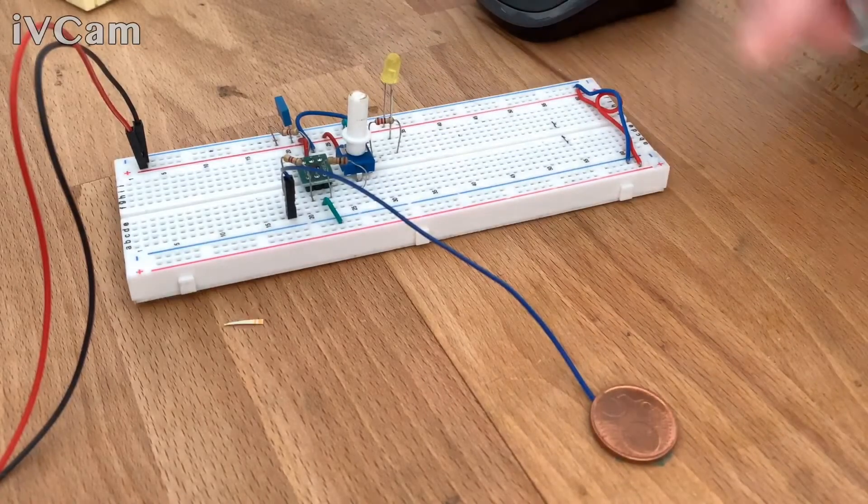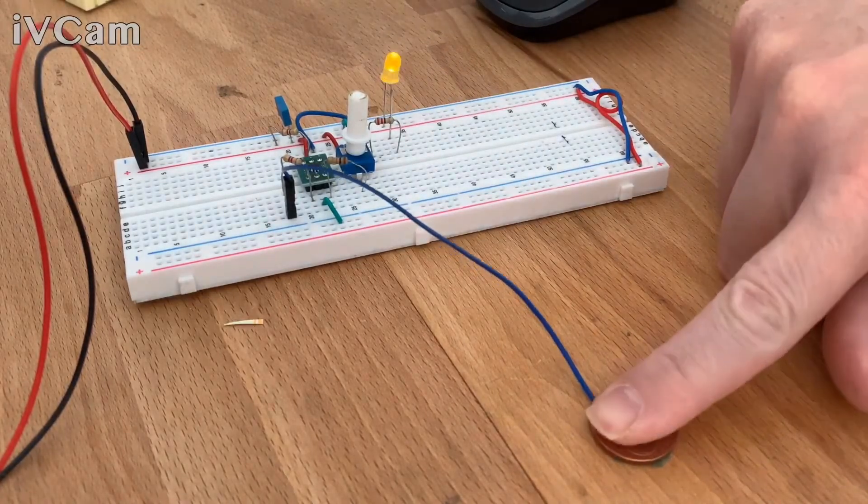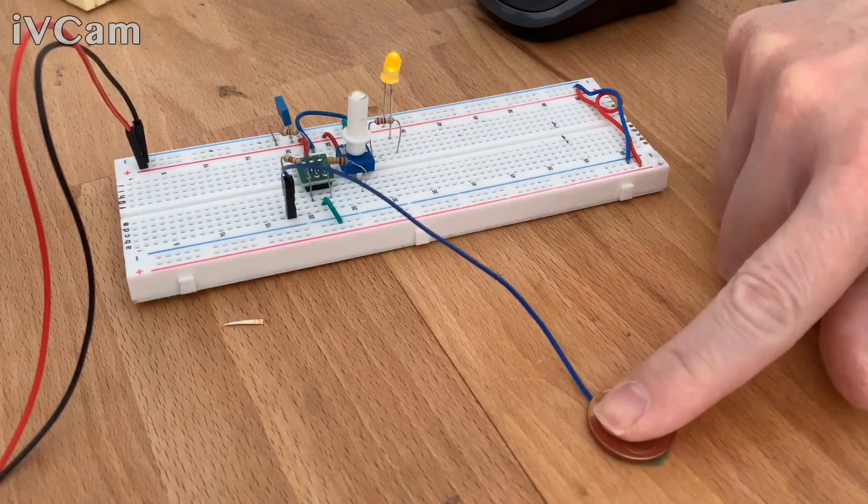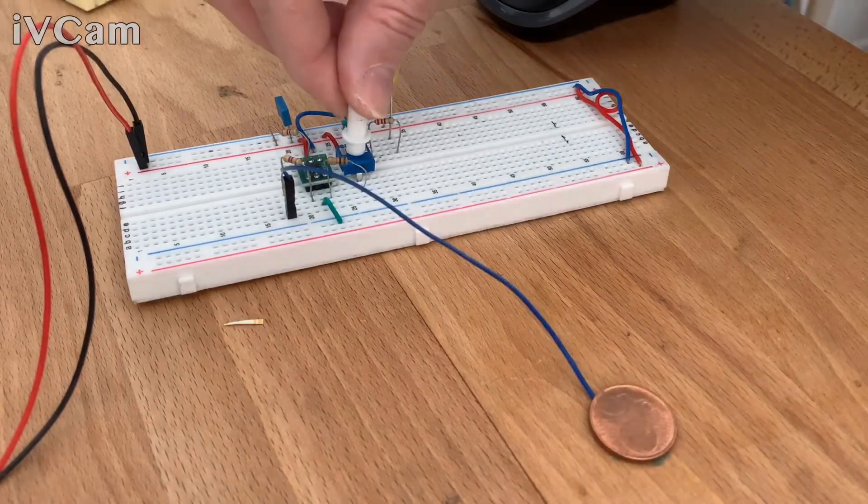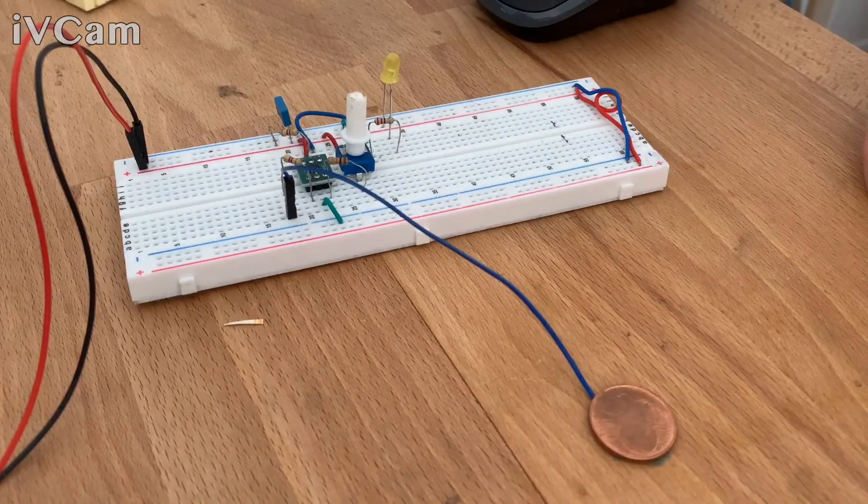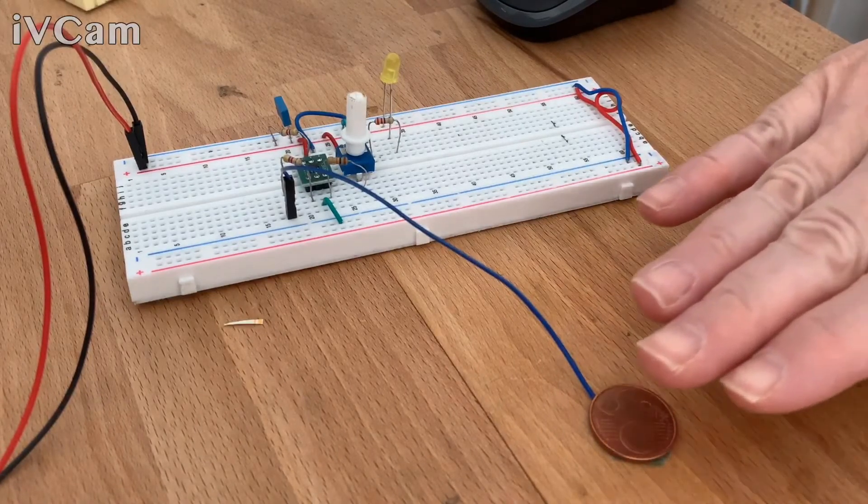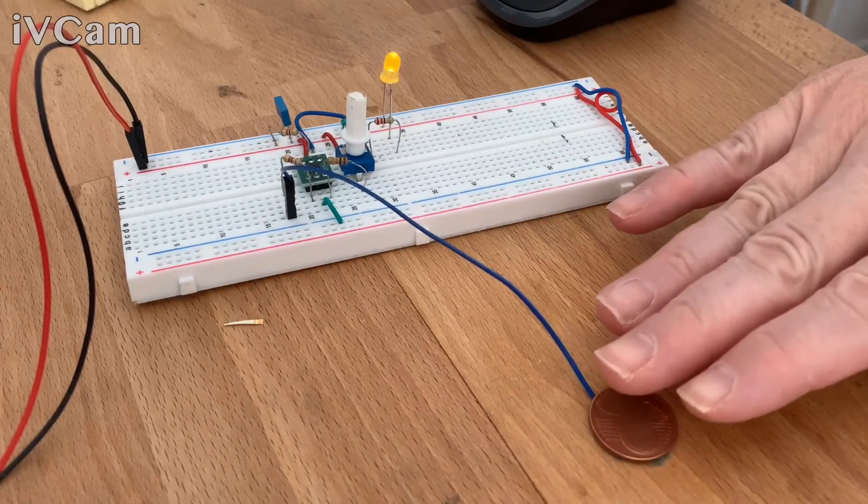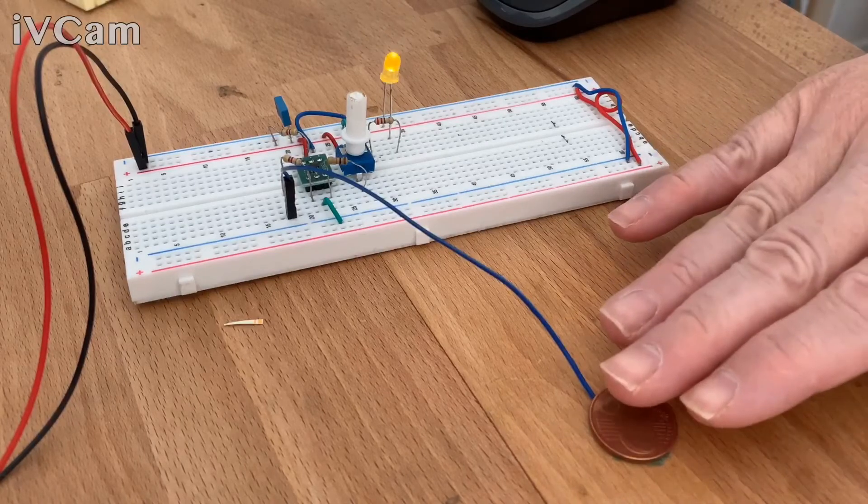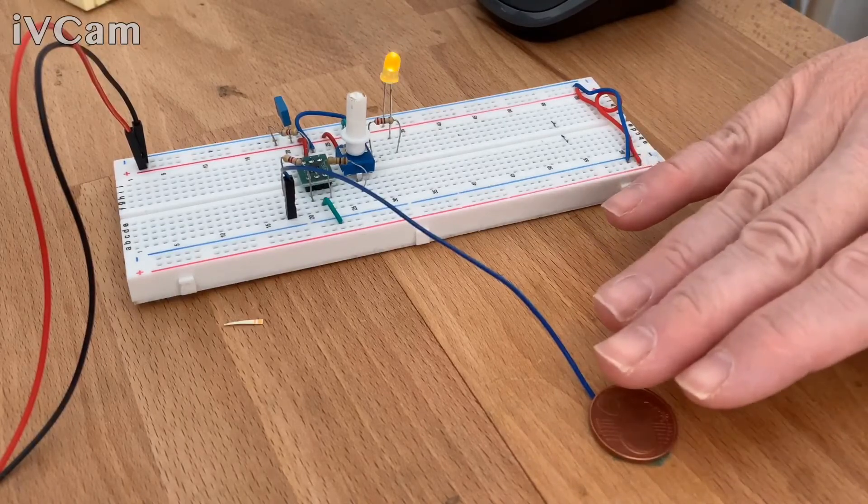The IC can be used with touch functionality, as you see here. But increasing the sensibility, it can be used also in mode proximity. So just without touching, just getting next to the metallic sensor.